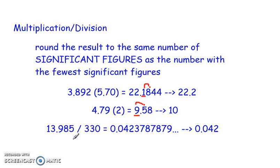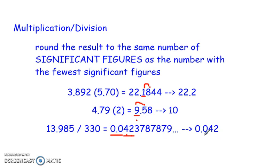So 13.985 has five significant figures. 330 has no decimal point, so that ending zero does not count — there are only two significant figures. My final answer should have two significant figures. Remember, beginning zeros are not significant; I do need those zeros at the beginning of the number, but they are not the two significant places. I need to go two places beyond those beginning zeros — so to this place — and then I look at the three. Three does not round it up. So 0.042 will be the answer. It only has two significant figures; again, those beginning zeros are very important but they are not significant figures.